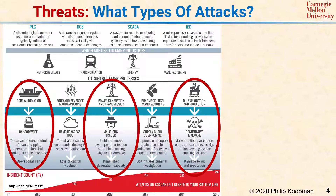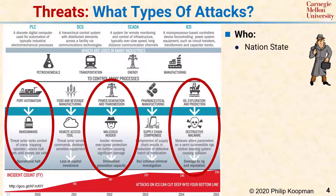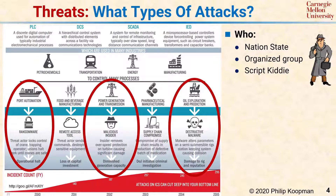When considering threats, there are two aspects to think about. The first is: who is the threat? Usually the most difficult threats come from nation-states, who have essentially unlimited resources. The next type of malicious actor is often an organized group, which can include both criminal groups and activist groups of various sorts. They present a significant threat, but often do not have quite the unlimited resources of a nation-state. Script kiddies are individuals of low ability who gain access to very sophisticated attacks by getting tools that permit them to use those attacks even if they don't really understand the details.